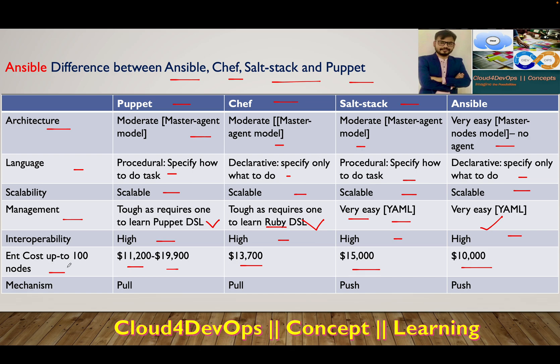Ansible uses a push mechanism where it pushes the configuration out and gets the job done, whereas Puppet and Chef follow a pull mechanism. SaltStack also follows a push mechanism — based on the documentation, it pushes out the configuration and handles the rest.